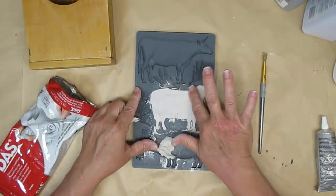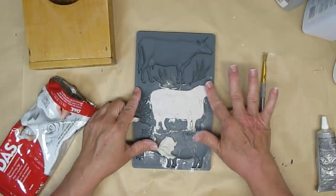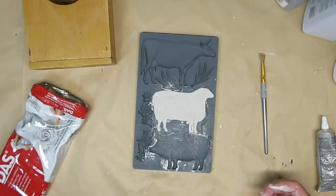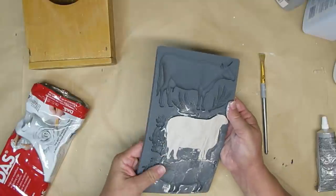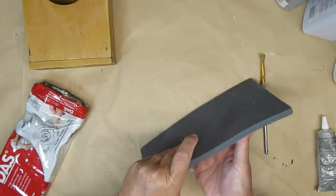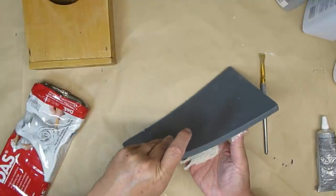This is the best part: taking the clay out of the mold and looking at how easy it comes out. You literally just bend the mold a little bit and it starts to fall out.